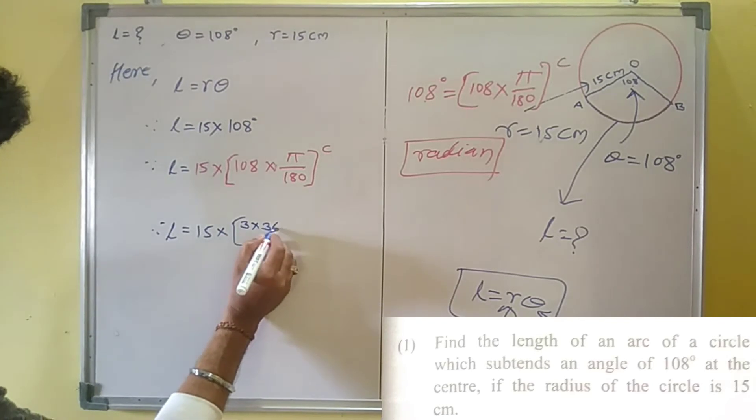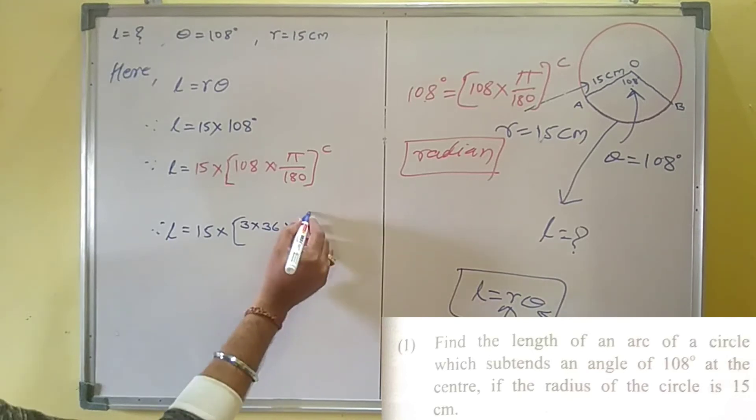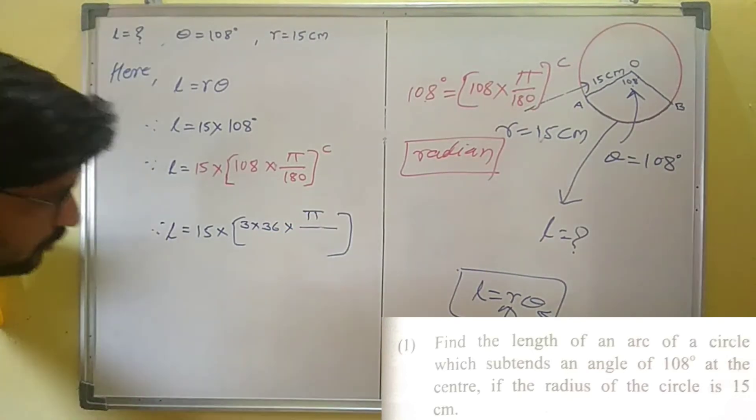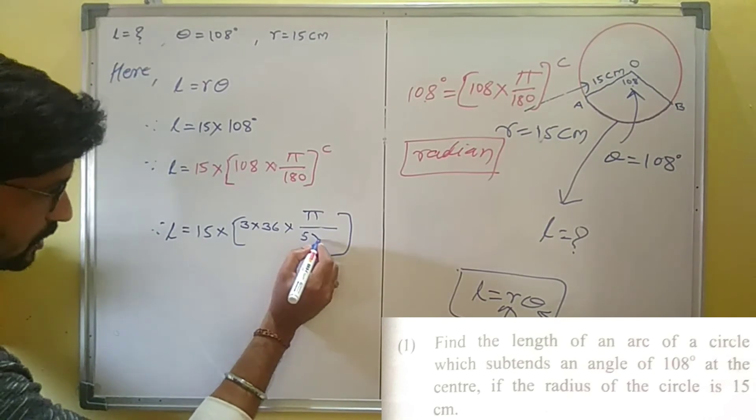5 into 36. This is the conversion from degree to radian.